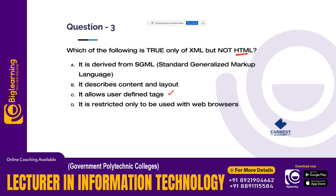SGML — Standard Generalized Markup Language — is a derived language for both XML and HTML. It can describe content and layout, and it can be used in a web browser.